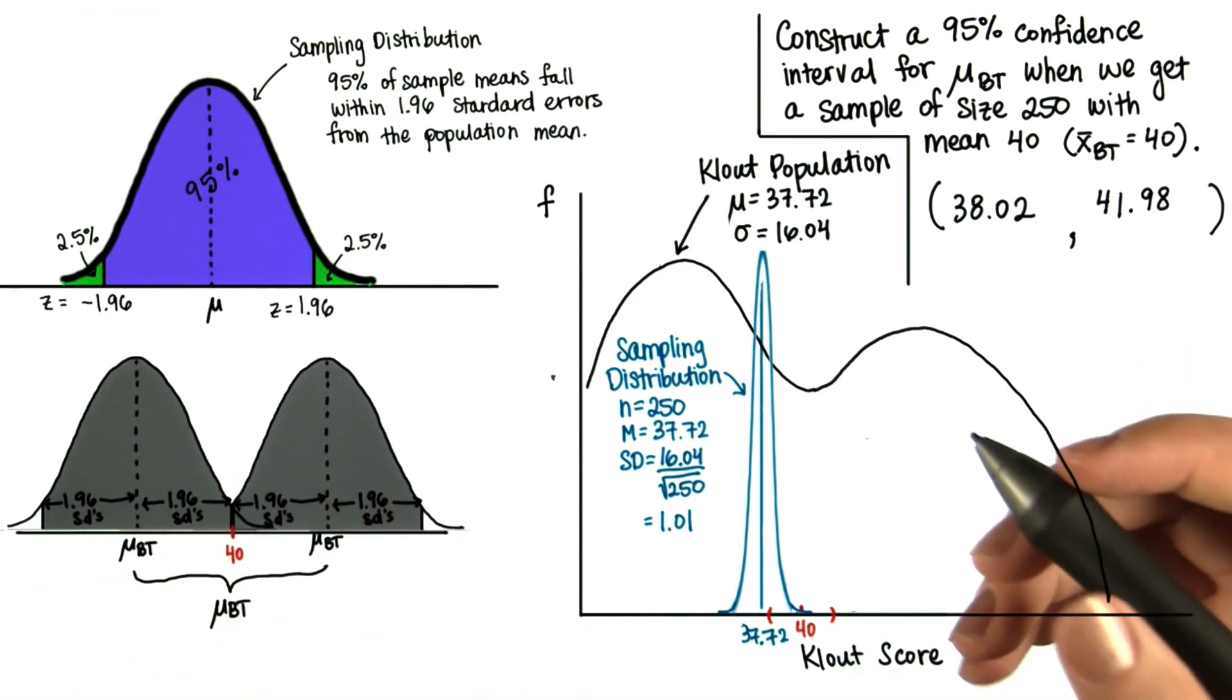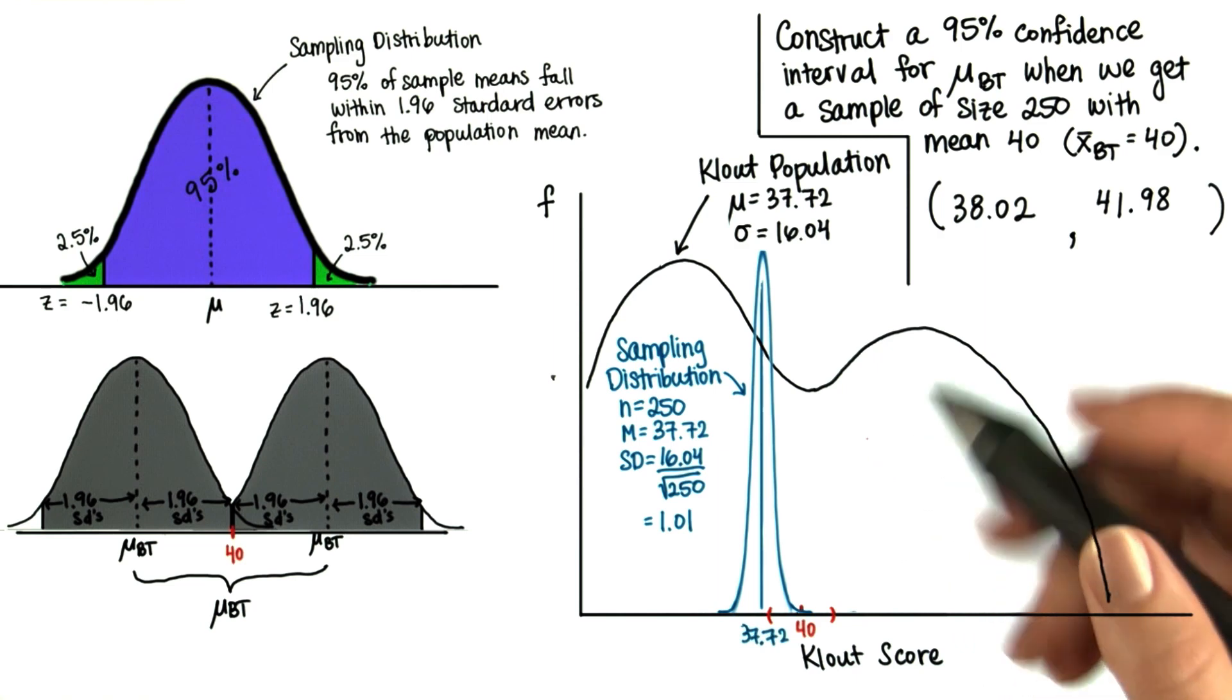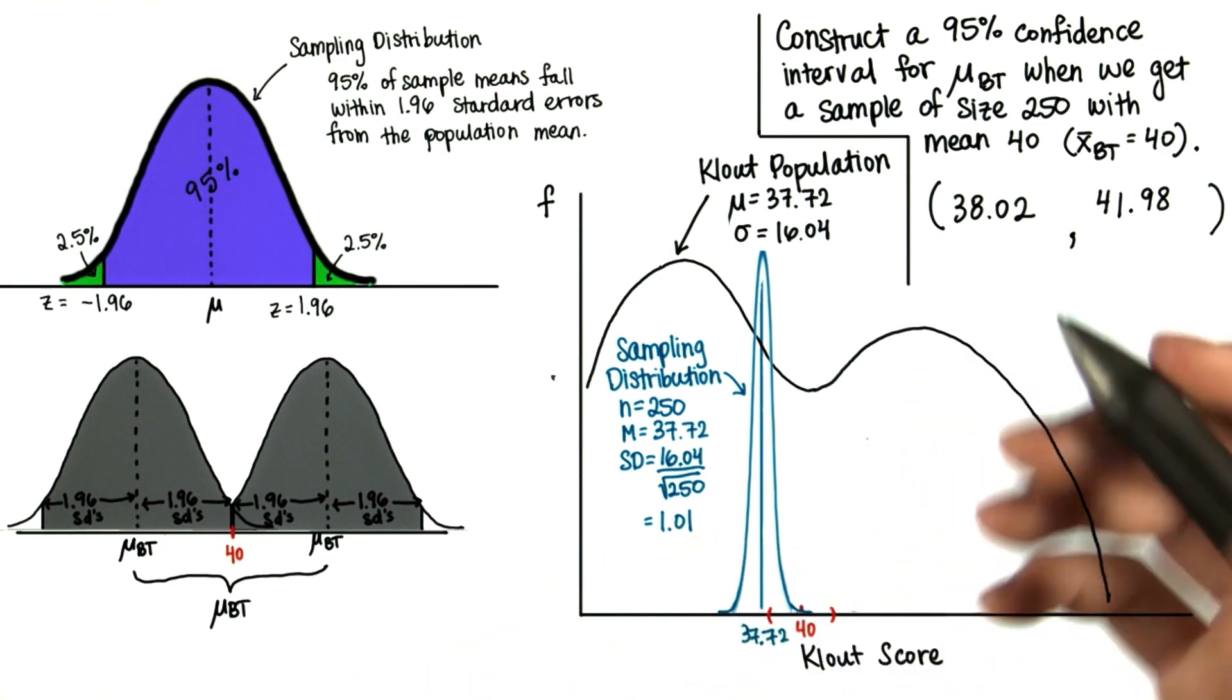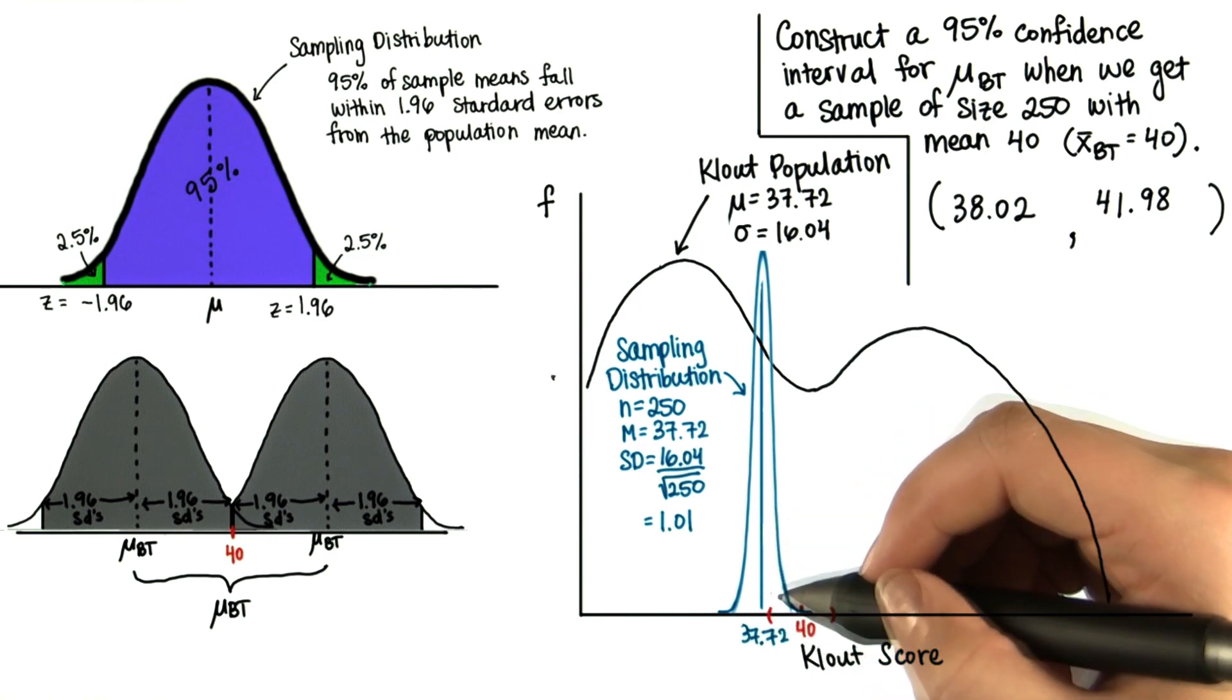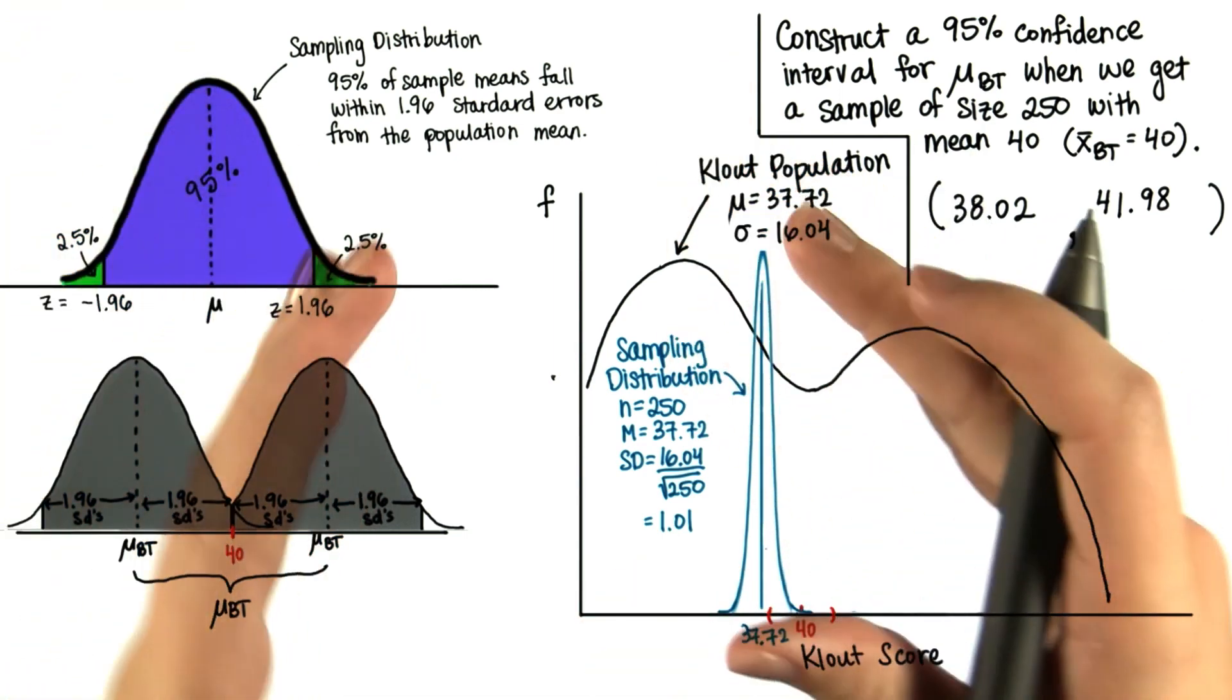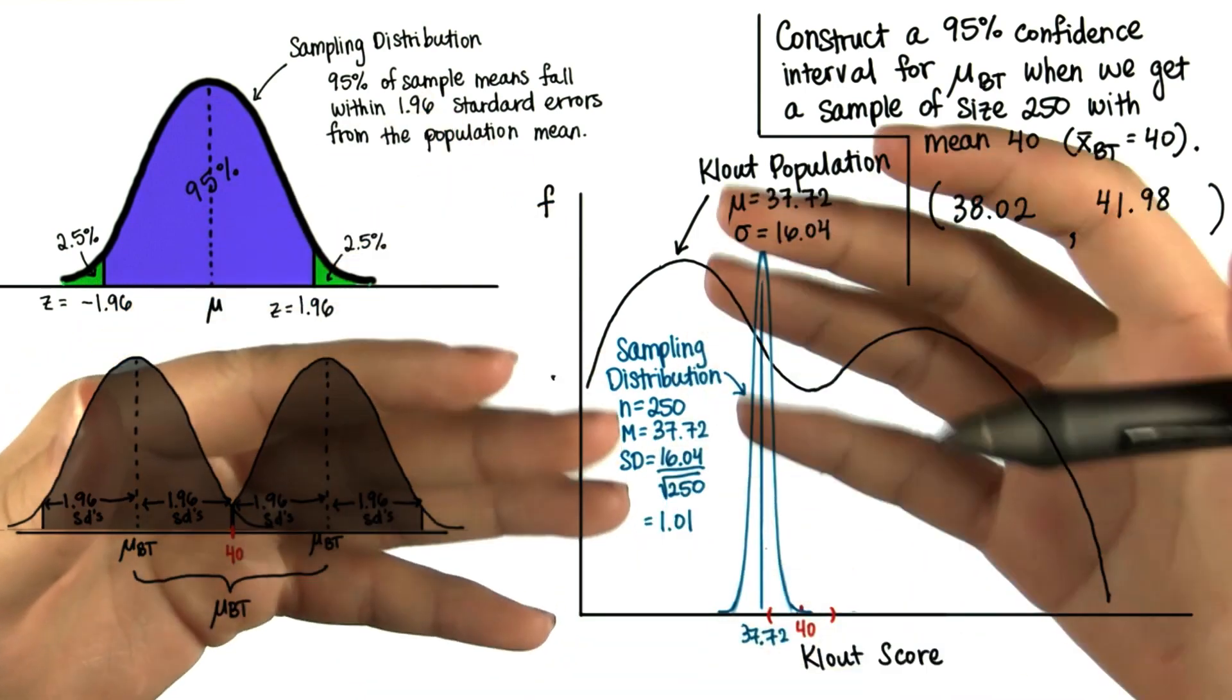Bigger samples give us more precise estimates by giving us smaller intervals, because they shrink the standard deviation of this sampling distribution. So they shrink the interval in which a sample mean might feasibly lie.